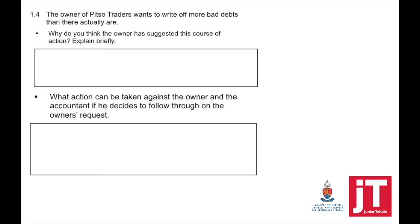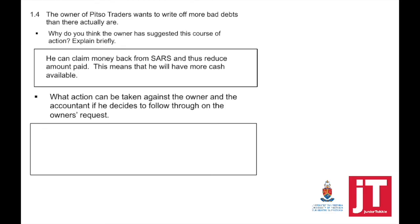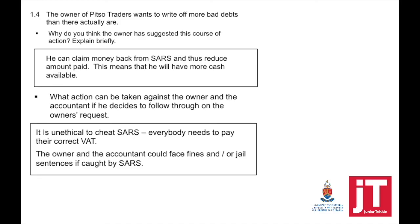Question 1.4: The owner of PITSO Traders wants to write off more bad debts than there actually are. Why do you think the owner suggested this? He can claim money back from SARS and thus reduce the amount paid, meaning he will have more cash available — this is why he wants to inflate bad debts. What action can be taken against the owner and the accountant? It is unethical to cheat SARS. Everybody needs to pay their correct VAT. The owner and the accountant could face fines and/or be jailed or sentenced if caught by SARS. It is unethical behaviour.